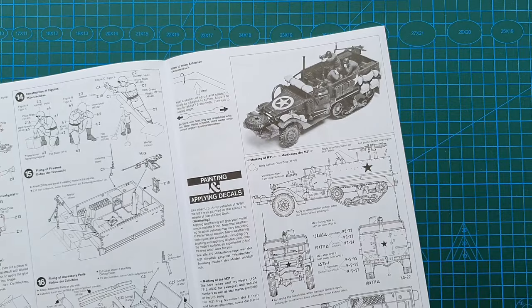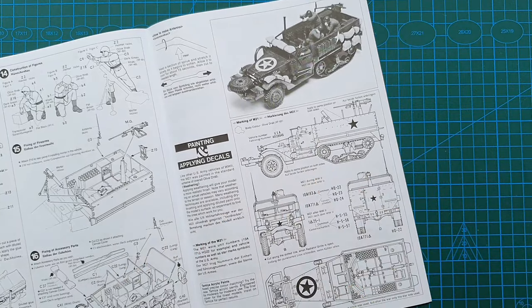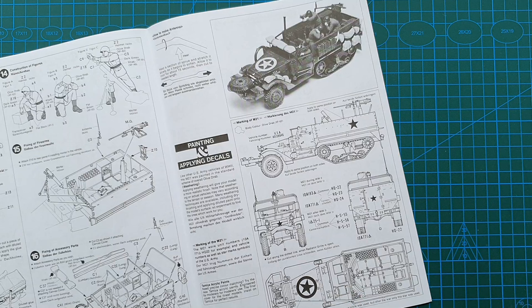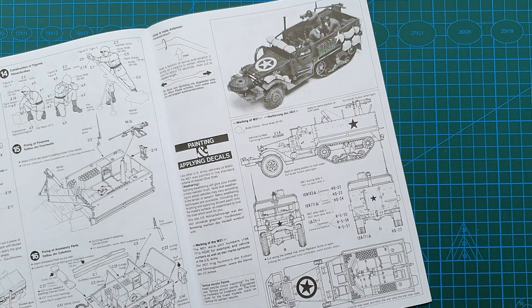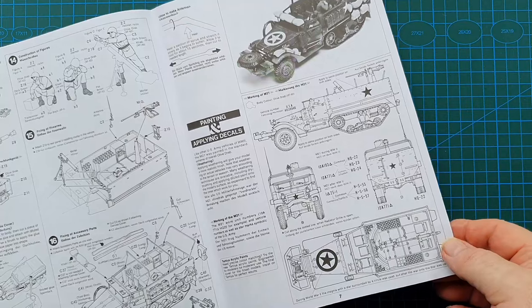This is the markings going on. In this kit, the decals give you two World War II and one post-war decal set. There were only 110 of these built, 57 of which were used by the Free French forces.